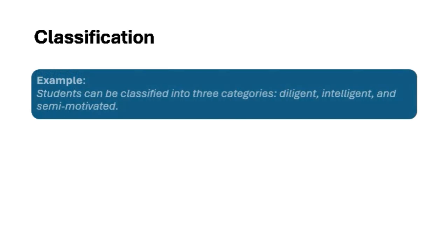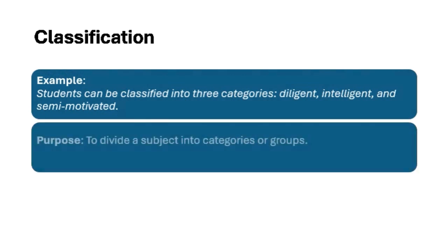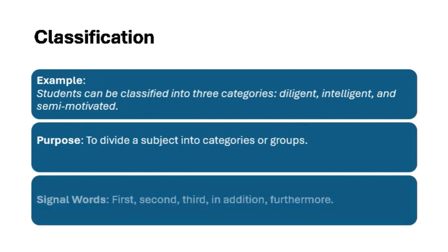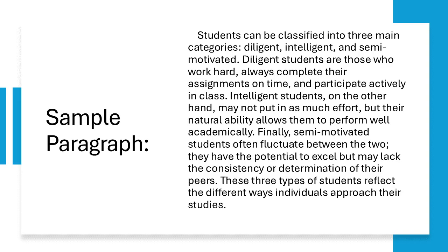Finally, we have classification. This is where you break down a subject into categories or groups. Say you're classifying students into types: the diligent, the intelligent, and the semi-motivated. You'd describe the traits of each category, showing how they differ from one another. This method is helpful when you're trying to explain the variety or range within a topic. This paragraph is a great example of classification, where the writer organizes students into distinct categories based on their approach to academics.